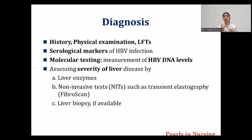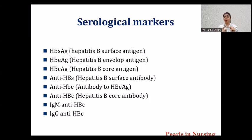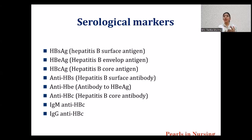For confirmation, we perform two types of testing: serological testing and molecular testing. In serological testing, there are eight markers — three antigens and five antibodies. The three antigens are HBs antigen, HBe antigen, and HBc antigen. The body makes corresponding antibodies: anti-HBs for HBs antigen, anti-HBe for HBe antigen, and for HBc antigen the body makes three types of antibodies — anti-HBc, IgM anti-HBc, and IgG anti-HBc. So there are eight serological markers total.